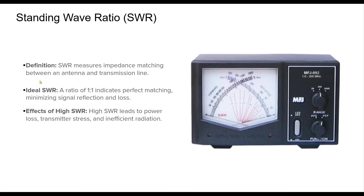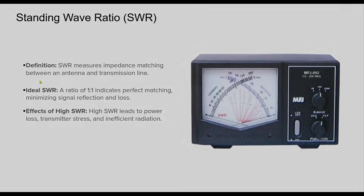Standing wave ratio, or SWR, is a critical metric in antenna systems, indicating how well power is transferred from the transmitter to the antenna. An ideal SWR of 1 to 1 means that all transmitted power is radiated with no reflections. However, high SWR values, such as 3 to 1 or higher, cause significant power to be reflected back towards the transmitter, leading to inefficiency, potential damage to components, and degraded signal quality. Proper impedance matching using tuners or matching networks ensures efficient energy transfer and optimal antenna performance.